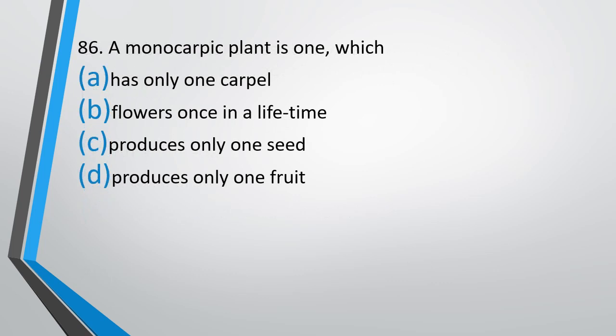Question number 86. A monocarpic plant is one which: has only one couple, flowers once in a lifetime, produces only one seed, or produces only one fruit. A monocarpic plant is one which — the correct answer is option B, one which flowers only once in its lifetime.